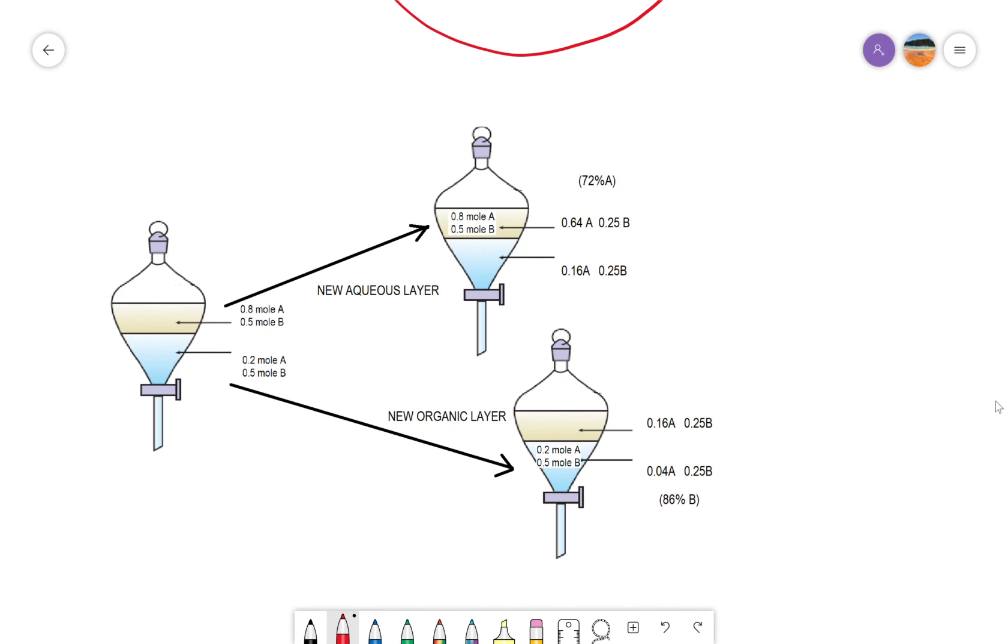If we then took that mixture and we took the upper layer from that and put it into a new separatory flask, so we're going to extract the upper level with a new aqueous layer, and we took the aqueous layer that we just separated off and put it into a different separatory funnel, we could extract it with a new organic layer. In this case, the aqueous layer would set up a new equilibrium and the organic layer would set up a new equilibrium.